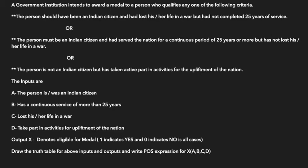Now we will try to mold this problem in terms of Boolean algebra. The inputs are: A denotes the person was an Indian citizen, B denotes has a continuous service of more than 25 years, C denotes lost his or her life in a war, and D denotes takes part in activities for upliftment of the nation. Based on these criteria A, B, C, and D, we will work out the given criterias and evaluate a Boolean expression.